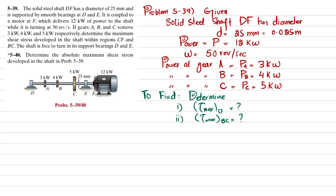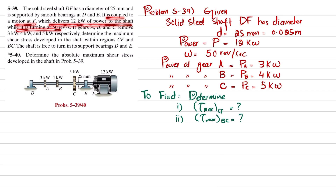Welcome back. Problem 5-39. The solid steel shaft DF has a diameter of 25mm and is supported by smooth bearings at D and E. The shaft DF is coupled to a motor at F which delivers 12kW of power to the shaft while it is turning at 50 revolutions per second.